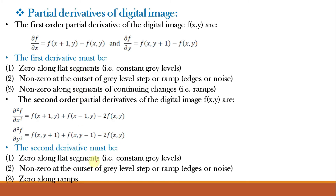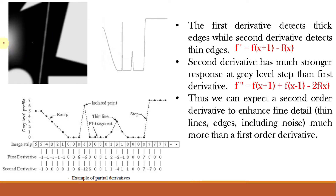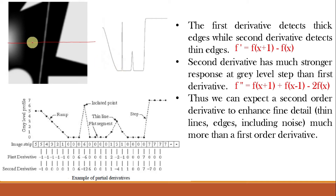Let us understand these properties using one example. Consider a particular image being scanned along a line showing variation in intensity from brighter to darker. In between there is a bright white dot, then a dark region, then a line, then it becomes completely white. When scanning in one dimension, the gray level profile initially is white, then gradually becomes dark, then there is a sudden increase from dark to white at the white dot, then dark again, then brighter at the line, then finally complete white.